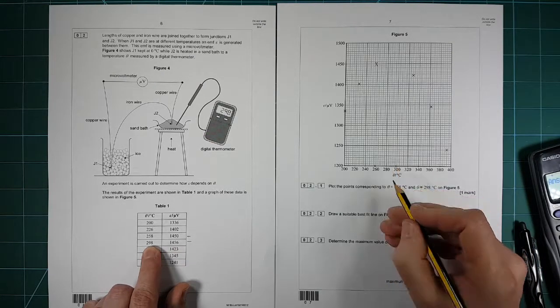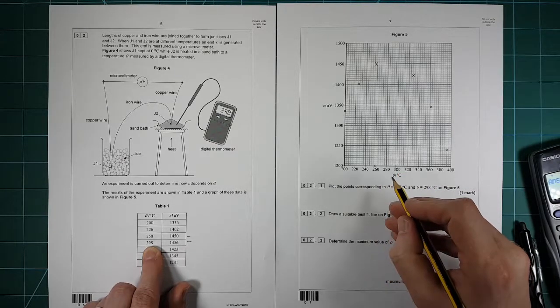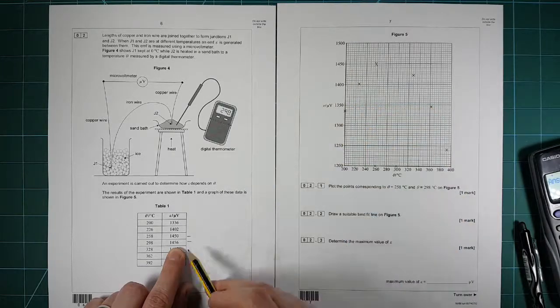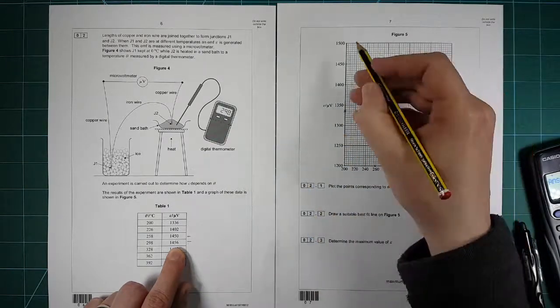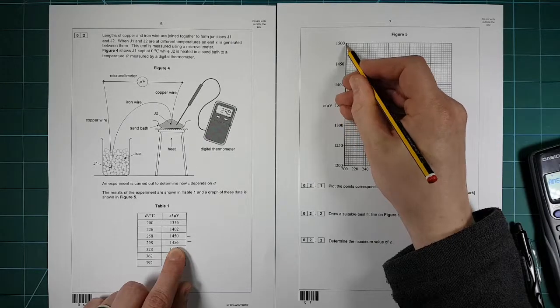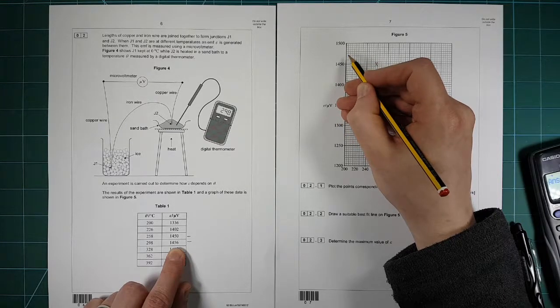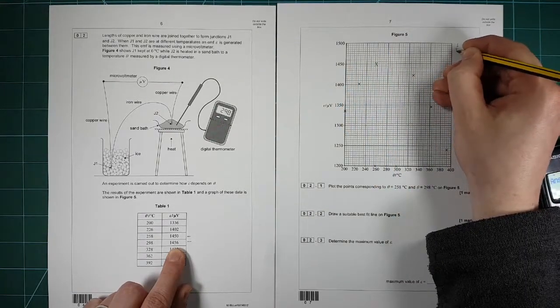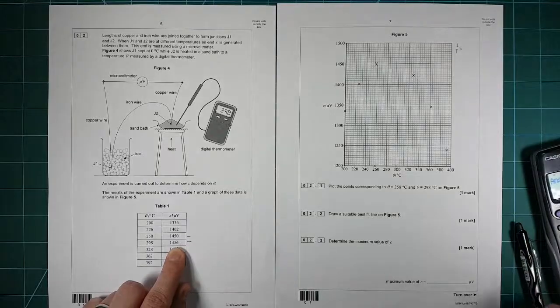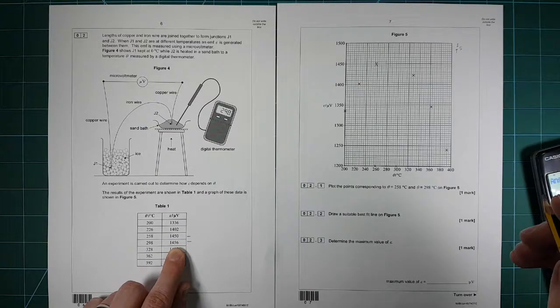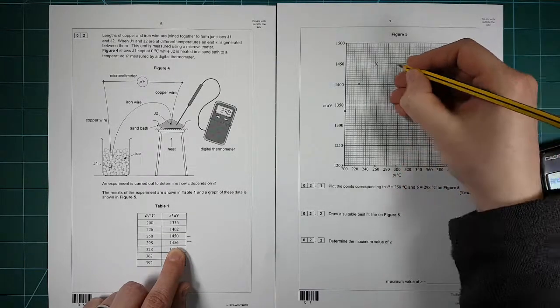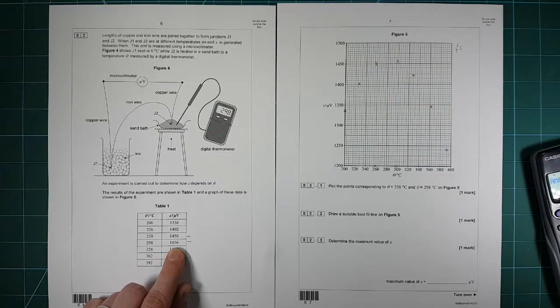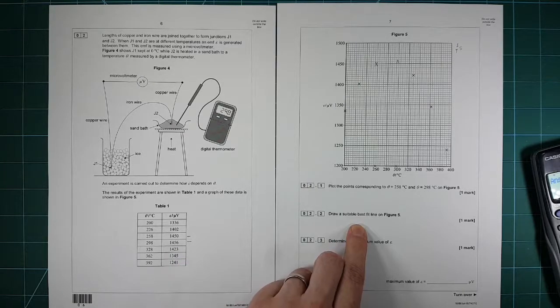And then the next one is 298. So again, we're going to be halfway between that bit and that bit. And then we want 1456. So the jump between there and there is 50, so each little box is 5. So we want one little box and a tiny, tiny bit. So that's one little box and a tiny, tiny bit leaves me with that.